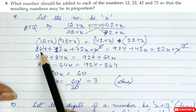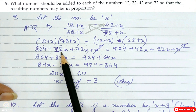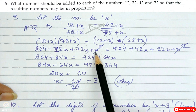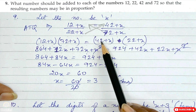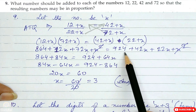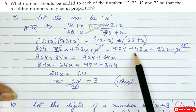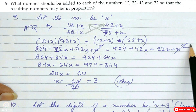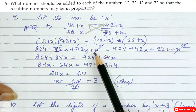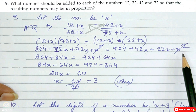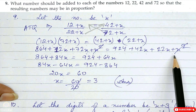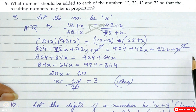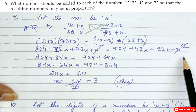Cross multiplying: (12 plus x)(72 plus x) = (42 plus x)(22 plus x). Expanding: 864 plus 12x plus 72x plus x² equals 924 plus 42x plus 22x plus x². The x² terms cancel from both sides since they are equal.